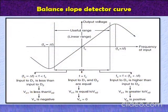Let's see the curve of balance slope detector which shows the characteristics of the balance slope detector. In first case, output voltage is negative because the input to D1 is less than the input to D2. It means the V01 is less than V02.